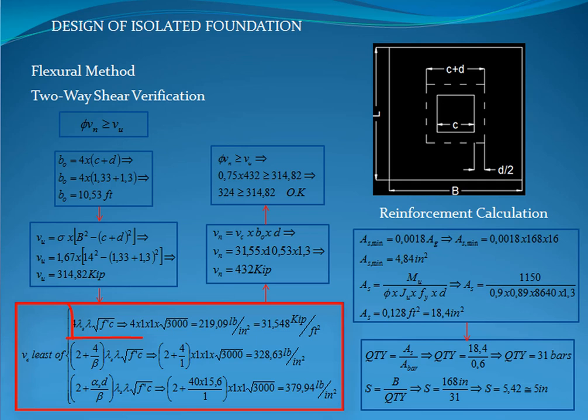Now, we calculate the shear strength force for two-way shear verification, resulting in 432 kilopounds. The last step of this verification is to compare that the factor shear force isn't greater than the shear strength of the concrete, and as you can see, the verification passed.